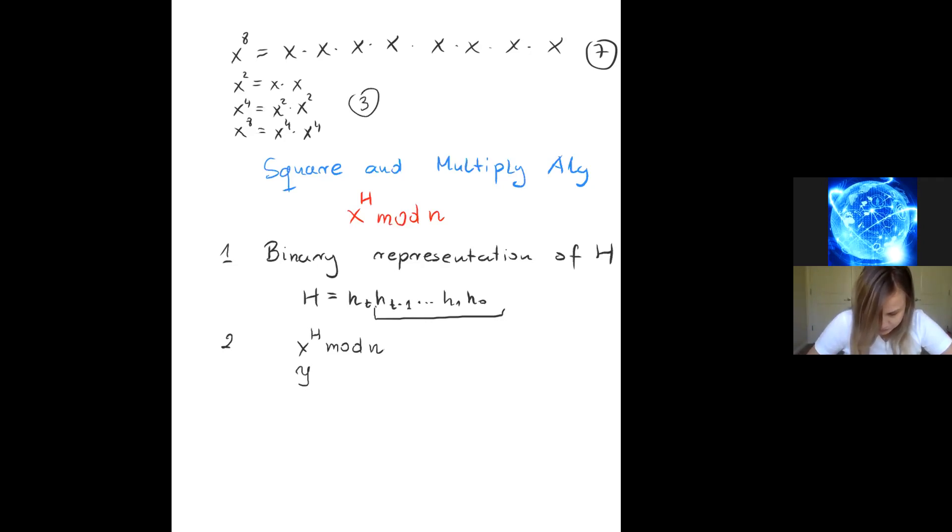Once we have this, we can do our algorithm. We compute x to power h modulo n. Initially we need another variable, so we use y for this one. Initially this y is equal to x. Then for i equal t minus 1 to i equals 0, we compute y equals y squared modulo n. Then we check if h_i, this bit number h_i, is equal to 1. Then we have to do one more computation: y equals x times y modulo n.